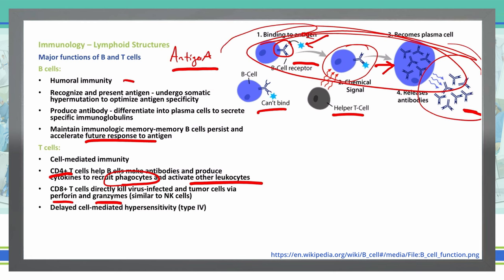T cells are part of a delayed cell-mediated hypersensitivity — if you remember those hypersensitivities, that is a type 4 hypersensitivity. It is also associated with acute and chronic cellular organ rejection. So if you have an organ transplant and experience rejection, that is due to our T cells rejecting that particular organ based upon its genetic makeup.